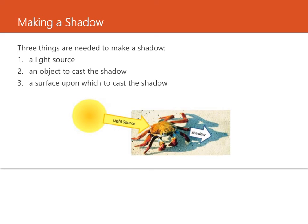Let's look at making a shadow — this is pretty cool. The length and direction of shadows can change throughout the day because the Earth rotates on its axis. Three things are needed to make a shadow: number one, a light source; number two, an object to cast the shadow — here the object is a crab; and number three, a surface upon which to cast the shadow — here it's the sand. The crab is blocking the light that would otherwise reach the sand, and a shadow is created in the shape of that object.